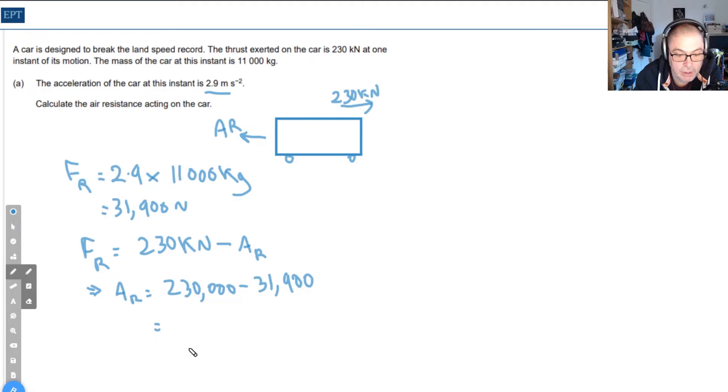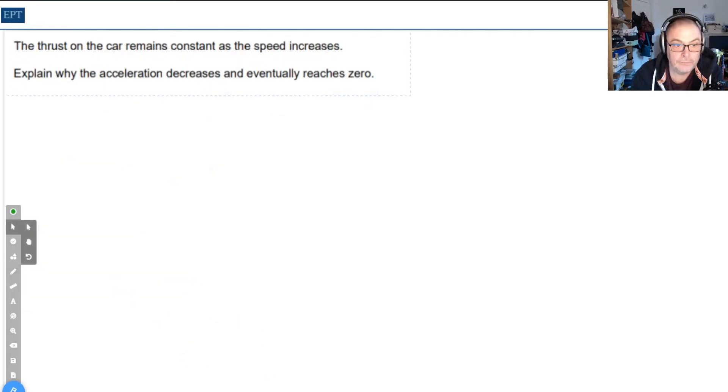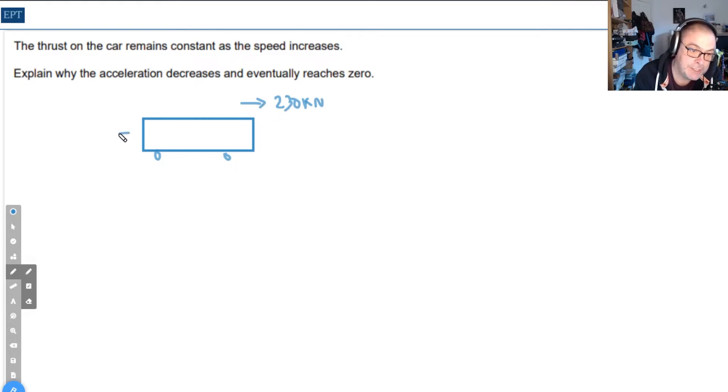The next part asks us to explain why as the car speeds up, the acceleration gradually decreases and eventually becomes zero. This is about terminal velocity. The thrust on the car remains constant at 230 kilonewtons, and as it's accelerating, the velocity goes up, which means the air resistance also increases.